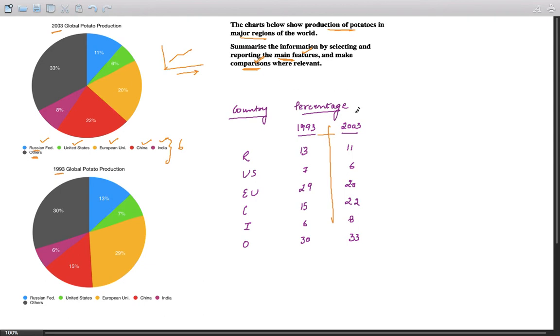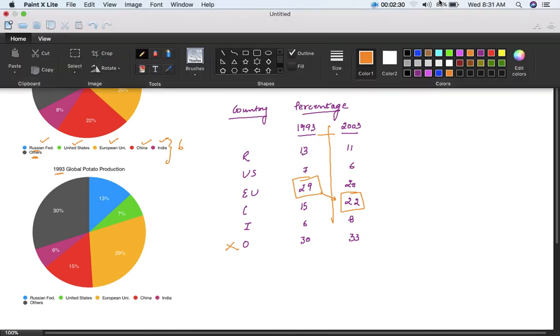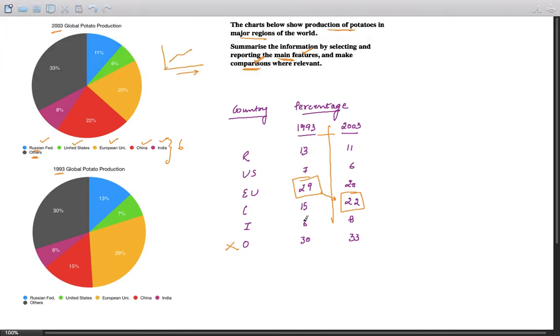Let us proceed with it. What do you mean by main features and what do you mean by comparisons? Well, the main feature in each year is the maximum and minimum. What is the maximum in 1993? Let us leave others out of the picture. Maximum in '93 is European Union, 29% of production, while maximum in 2003 is China with 22%. So there is a movement from European Union to China.